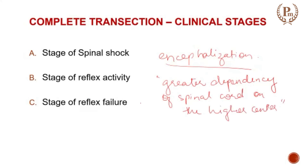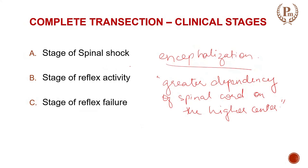In animals lower on the evolutionary scale, in frogs the stage of spinal shock probably lasts for only a few minutes. In cats and dogs it may last for a few hours, in monkeys for a few days, but in humans this stage lasts for around three weeks.